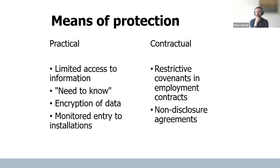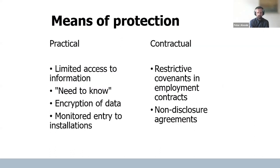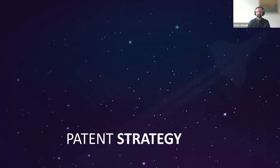Why is trade secret so important? Because sometimes researchers' knowledge cannot be protected by patent, so we have to keep it as a trade secret. Means of protection include limiting access to information, talking only about benefits rather than how you do it, having contracts with employees and colleagues, and having non-disclosure agreements in place when disclosing details to a business partner.